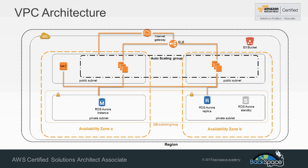To allow those databases to get updates through to the internet, we're going to have a NAT instance that will connect up through to an internet gateway. Our internet-facing traffic will be handled through an elastic load balancer, which will distribute traffic across an auto scaling group of EC2 instances that will contain our WordPress application.